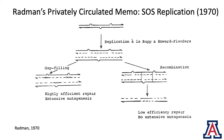Miro Radman also plays an incredibly important role in the SOS response — Miro and Evelyn are both credited with it. He privately circulated this memo on SOS replication in 1970. At that point, we knew about Ruben-Howard Flanders, where we had daughter strand gaps across from the UV damage. What Miro proposed was that those gaps were filled — this was highly efficient repair, SOS replication. Extensive mutagenesis — this is translesion synthesis. This is what Miro proposed.